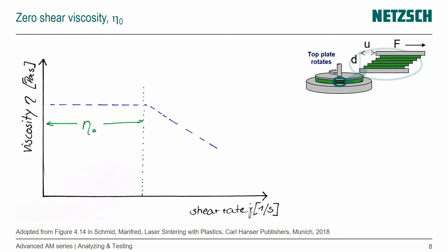We call that the zero shear viscosity, eta-naught. And then as soon as we reach a certain level of shear rate, and that's depending on the material itself and its molecular structure, then we see a shear thinning effect. That's what happens typically for any polymer material.